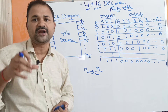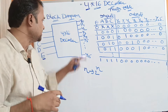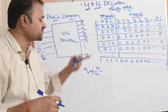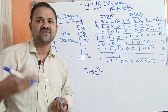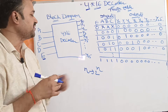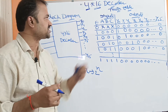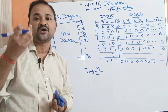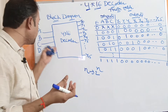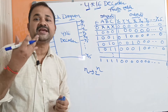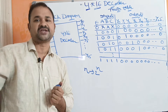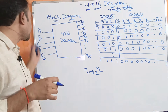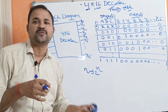A 4 by 16 decoder mainly produces 16 outputs: Y0, Y1, Y2, Y3, Y4, Y5, Y6, Y7, Y8, Y9, Y10, Y11, Y12, Y13, Y14, and Y15. So we can say that a 4 by 16 decoder is a many-to-many device circuit, because it accepts many number of inputs and produces many number of outputs.